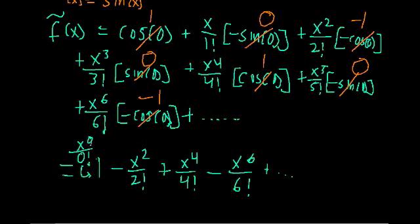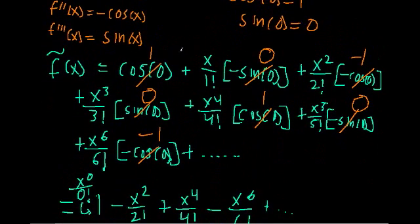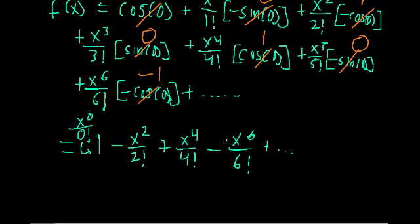We can see there's a nice pattern — here we have all the even terms. In the case with sine, we had all the odd terms. Because we started off at a different point and took derivatives from there, all the cosine terms got paired off with the even powers of x: x to the 0, x squared, x to the 4th, x to the 6th. And they all survived because x evaluated at 0 is just 1 or negative 1. All the odd terms got paired with all the sine terms, which all became 0 — it's the nice complement to the sine case. So we can guess the next terms are x to the 8th over 8 factorial, and x to the 10th over 10 factorial.